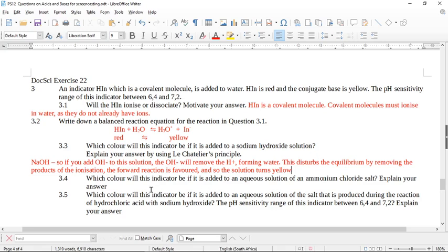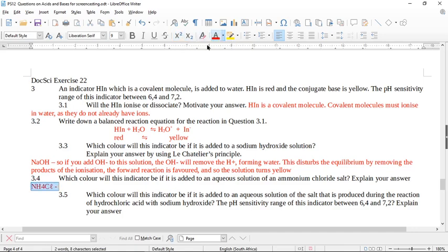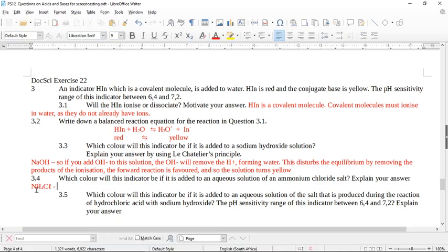Okay, which color will this indicator be if it is added to an aqueous solution of an ammonium chloride salt? Explain your answer. So now, in my brain, I know ammonium chloride, NH4Cl. So this is ammonium chloride. What happens when you add the ammonium ion? The ammonium ion, this dissociates to produce what? Protons. No, don't do that. Okay, so the ammonium chloride ion, what happens when this goes into water? We produce NH4 plus and Cl minus. And then the NH4 plus, this ammonium ion, is in equilibrium with NH3. So the ammonium breaks down into ammonia and a proton. So if we're adding protons, the reaction is going to want to shift to remove it, and then it's going to go back to red.